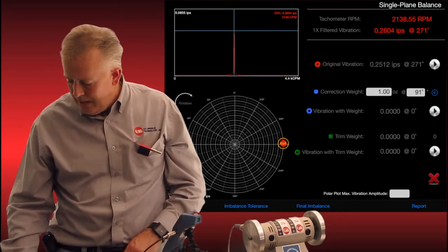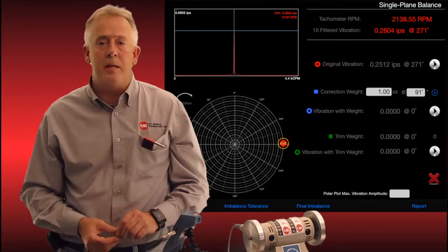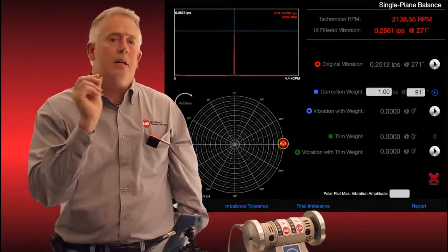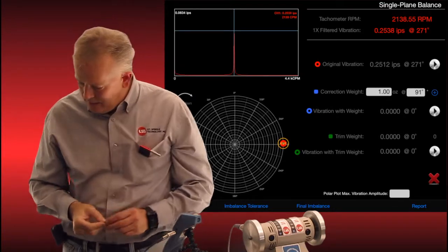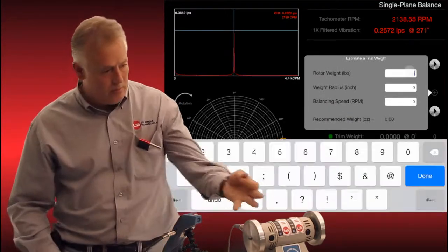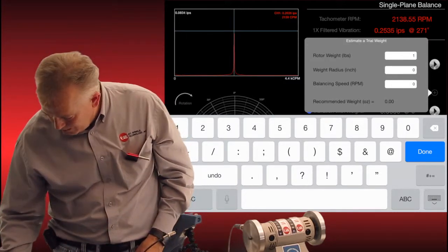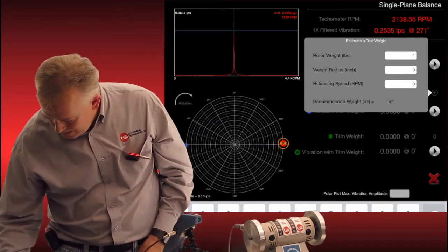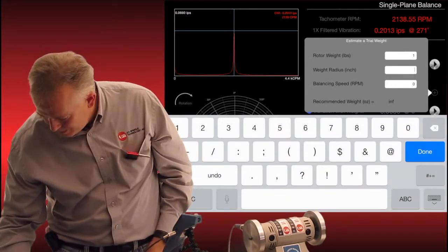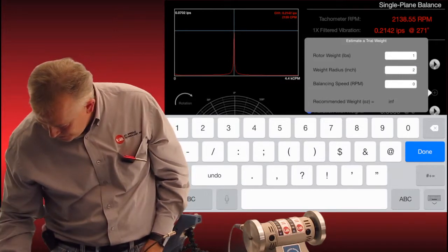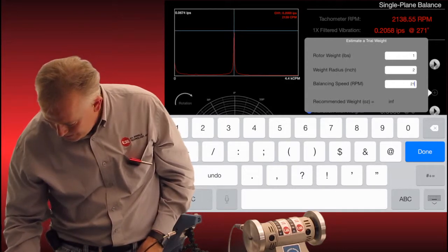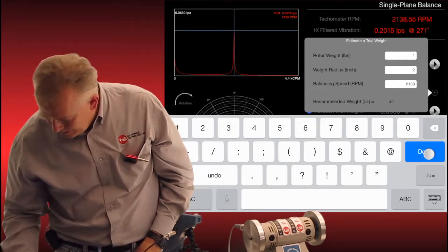And you see beneath it, it already has told me that it wants me to put my correction weight at 91 degrees. But not yet does it know what my correction weight weighs. It's telling me a suggestion, which if I hit this plus, it will bring up my rotor weight, which I'll guess that's about a pound. And I can put that in there. And it will tell me my weight radius, which is about two inches. So we'll tap that in and put two inches in there. And we know our balancing speed is 2138. So we'll put that in there. And I'm done.